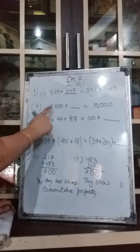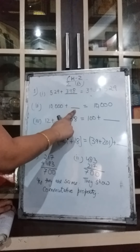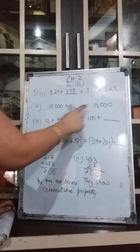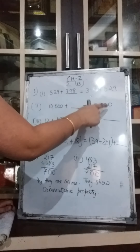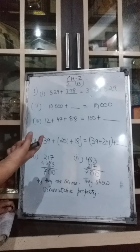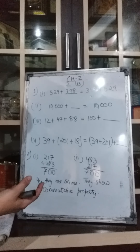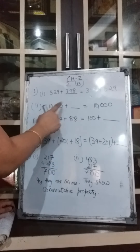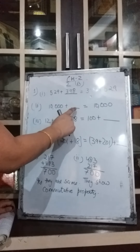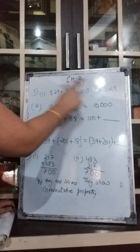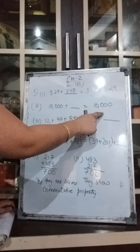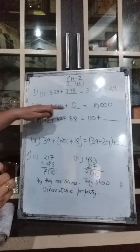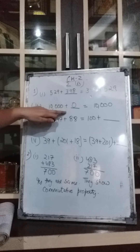Now the third part: 10,000 plus blank should equal 10,000. Anything added to 10,000 should give 10,000 only. Adding 1 gives 10,001; adding 2 gives 10,002 — only 0 works. On adding 0 we get the same number. So 0 is the answer, and this is the property of zero.